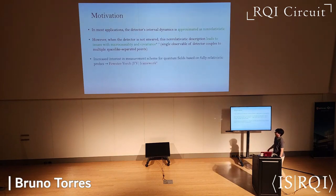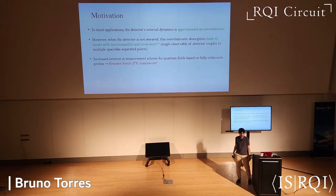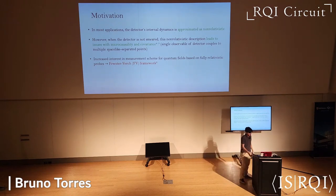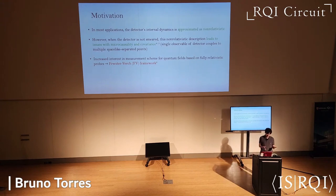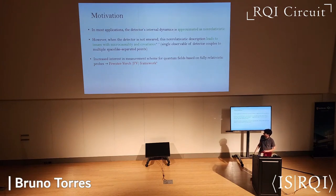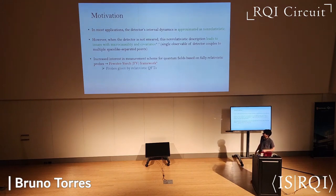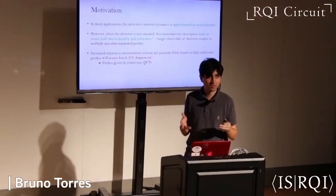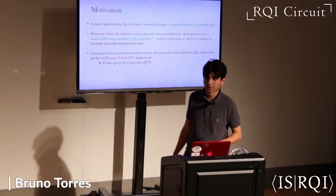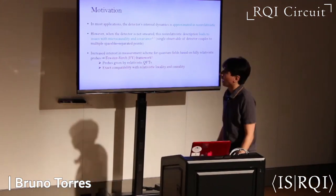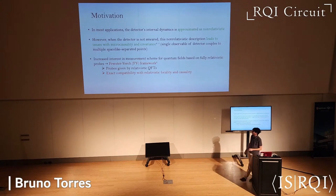This has raised a lot of interest in measurement schemes and general models for probes in quantum field theory that are fully based on a relativistic description of the probe itself. Perhaps the most important example for my talk is the Fewster-Verch framework, where the probes are given by relativistic QFTs fully formulated in terms of algebraic quantum field theory, and they can be made exactly compatible with relativistic locality and causality.